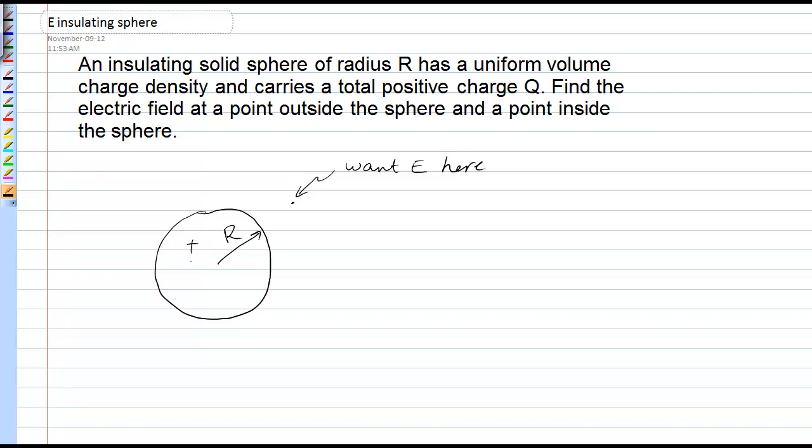If it's an insulating sphere, it means the charge is distributed uniformly throughout the entire volume. Now, in order to apply Gauss's Law, we have to have a very symmetric situation, and in this case, a sphere is highly symmetric.